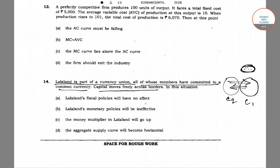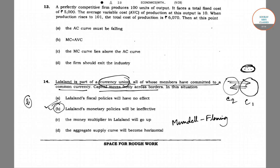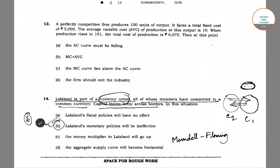In this situation, which of the following will happen? Options include: Lala Land's fiscal policy will have no effect, Lala Land's monetary policy will be ineffective, the money multiplier will go up, or the aggregate supply curve will become horizontal. According to the Mundell-Fleming model, when you are in a currency union with free movement of capital, your monetary policy will be ineffective. So option B is correct. The answer to question 14 is option B.